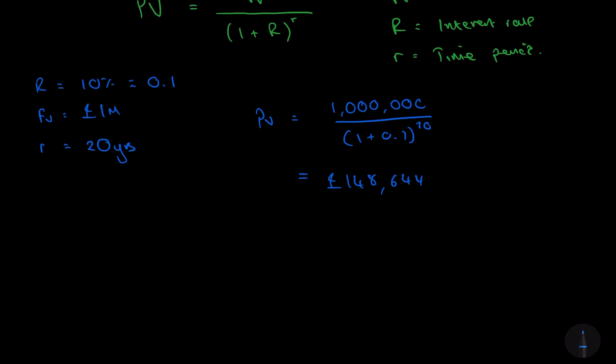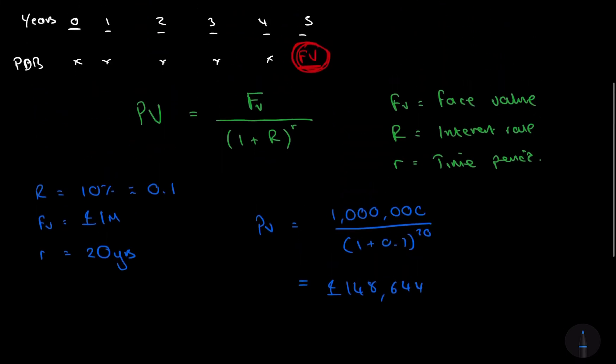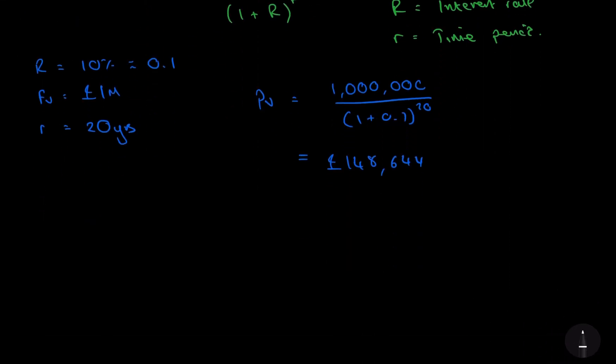So essentially what this means is this £1,000,000 in 20 years is going to be worth £148,644. Therefore, if we want to make money off this pure discount bond, the only way we can do this is by tendering an offer that is less than £148,644.